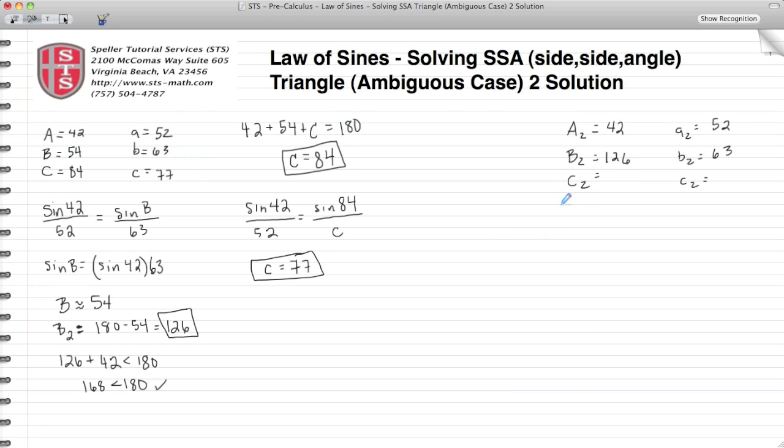Now let's focus our attention on our second solution or our second triangle. First thing we want to do is find the measure of angle C, and that's easy to do because we know that all three of these measures should add up to 180. We have 42 plus 126 plus the measure of C sub 2 should equal 180. When we do all the math and evaluate, we find out that the measure of C sub 2 is 12. So let's add that to our listing.